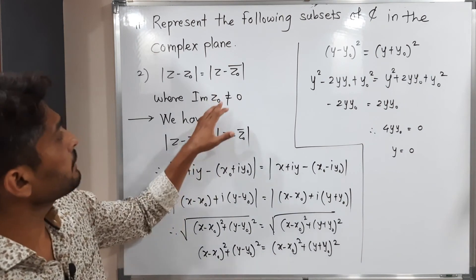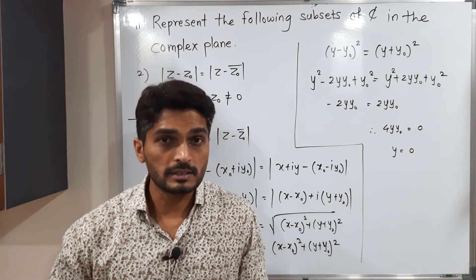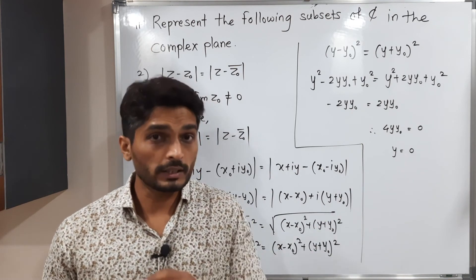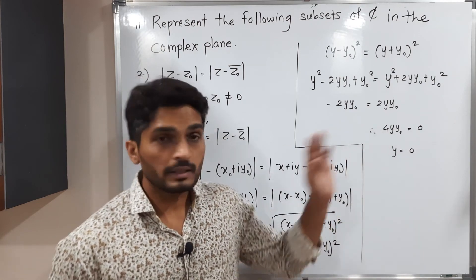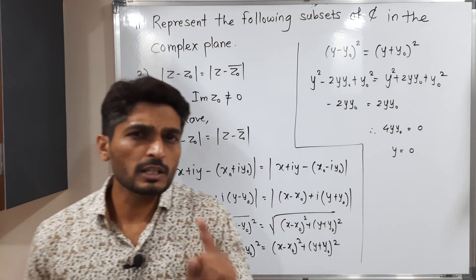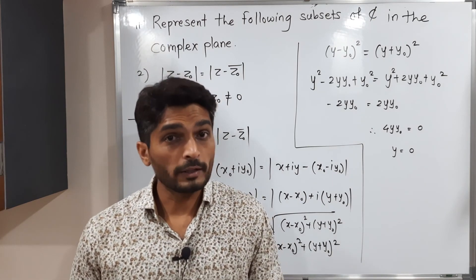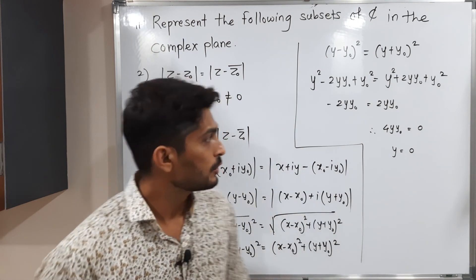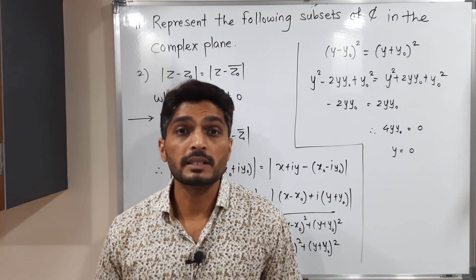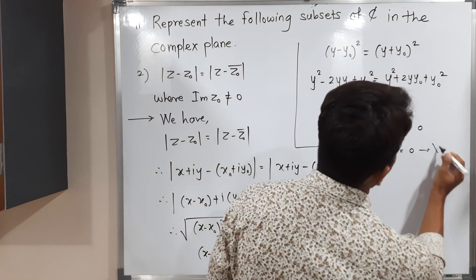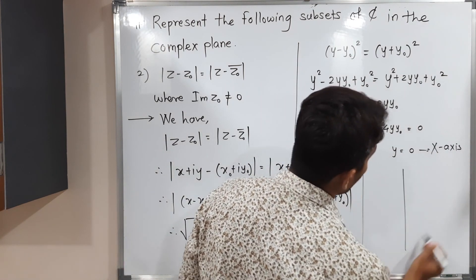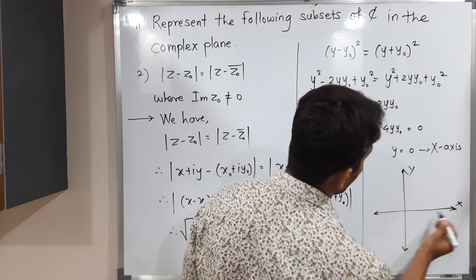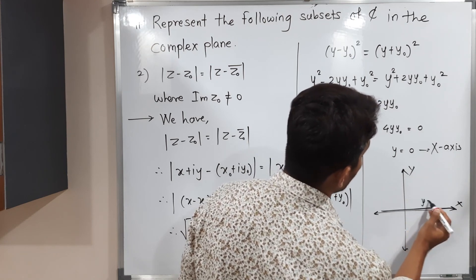They have mentioned that the imaginary part of Z₀ is not equal to 0, which means y₀ ≠ 0. Since 4 ≠ 0 and y₀ ≠ 0, the only possibility is y = 0. y = 0 represents the equation of the x-axis, which in the complex plane is the real axis. So this equation represents the real axis.